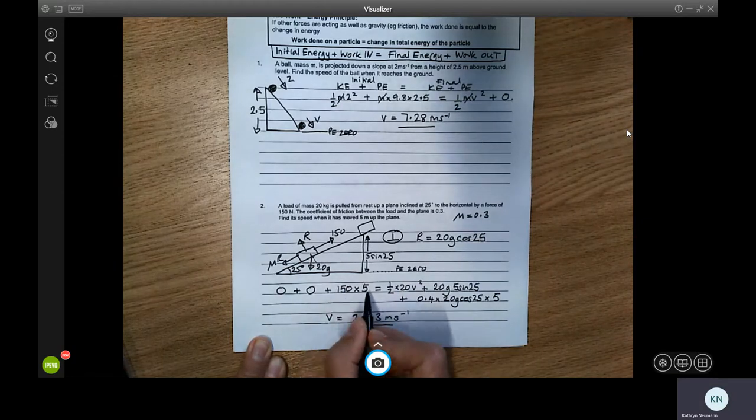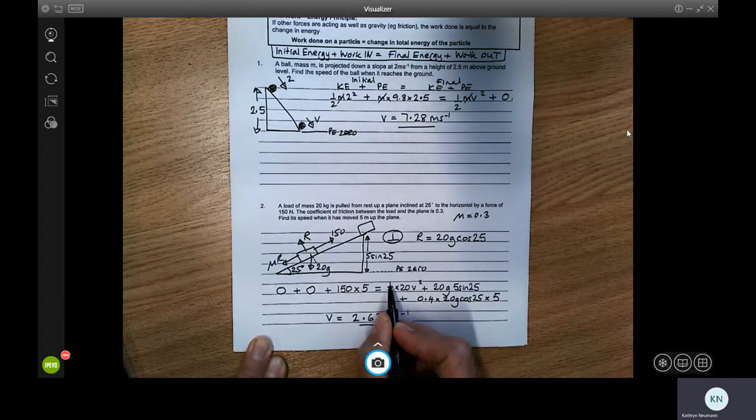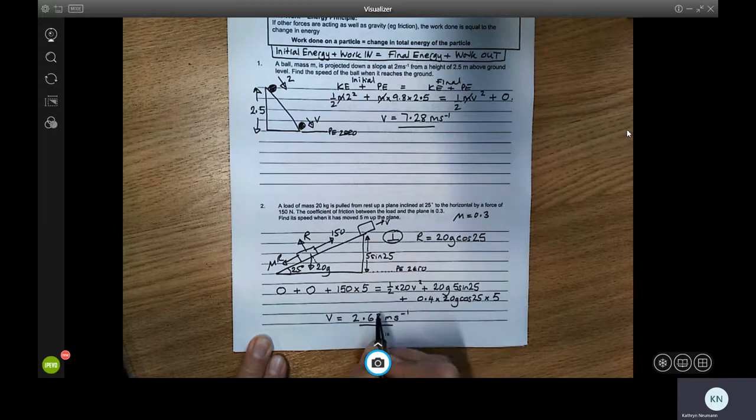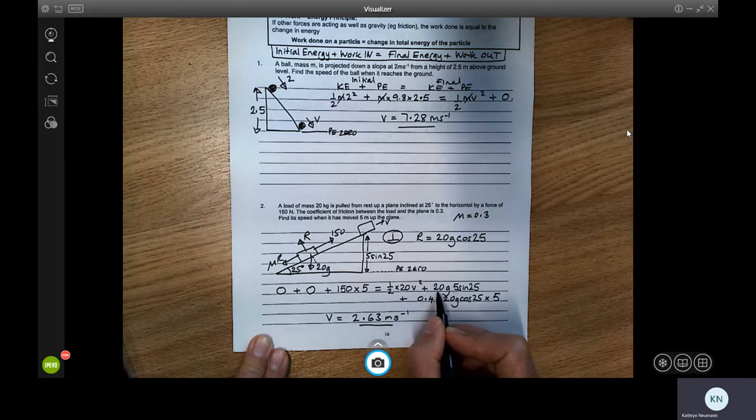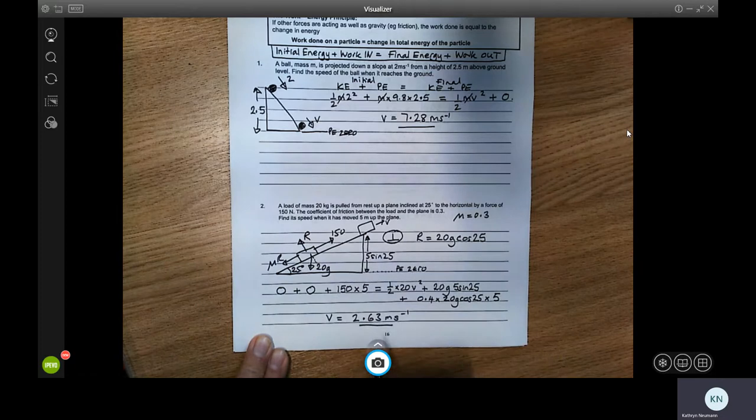The force that's the work that's put into this system is 150 multiplied by five. That's going to be equal to the kinetic energy at the end, which is a half times 20 times V squared. So it's moving with a speed of V at the end, plus the potential energy. Now, the potential energy is 20G multiplied by the height that it rises. Now, this height here is five sine 25.